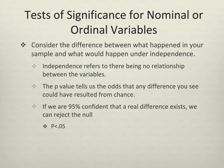The p-value tells us the odds that any difference you see could have resulted from chance. Generally, those that use inferential statistics agree that if we're 95% confident that there's a real difference, we can reject the null. As we discussed in previous units, some people will set their p or alpha at 0.1 or at 0.01, but p is most commonly set at 0.05.